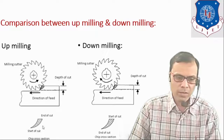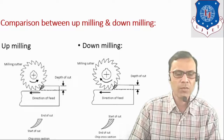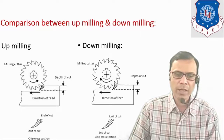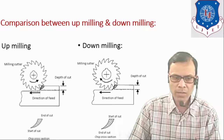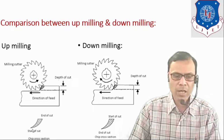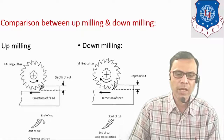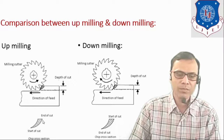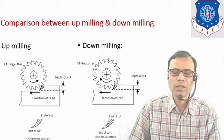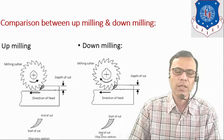Looking at the chip thickness in a magnified view: at the start of the cut the chip thickness is maximum, and it reduces to minimum at the end of the cut. In the case of down milling, the cutting force is maximum at the start of the cut.